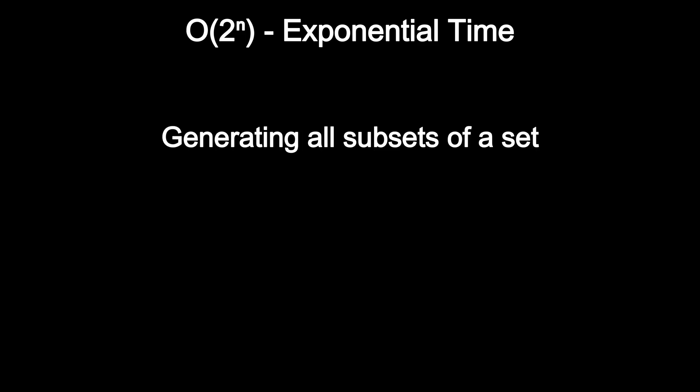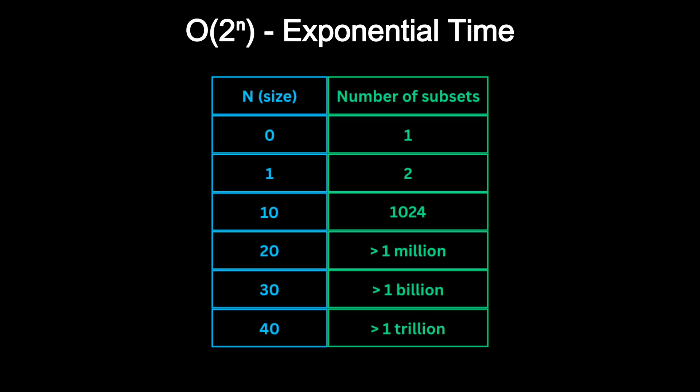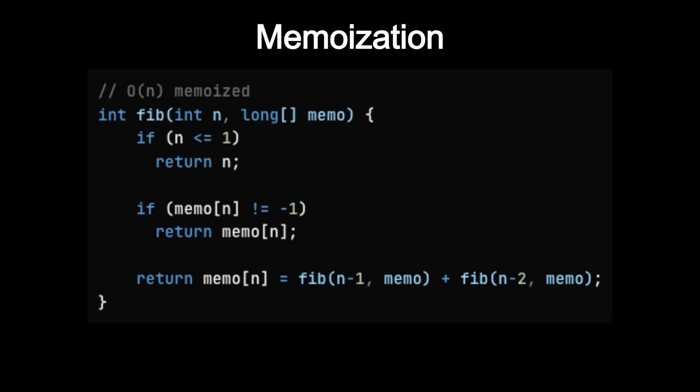A classic example is generating all subsets of a set, also called the power set. If the set has N elements, there are 2 raised to N possible subsets. That means just for 30 elements, you are looking at over 1 billion possibilities, and for 40, over 1 trillion. This kind of growth becomes unmanageable very quickly. Even a small increase in N makes the runtime explode. But the good news is that many exponential time problems can be optimized using techniques like memoization or dynamic programming. These techniques prevent us from recomputing the same subproblem, often reducing the time from exponential down to a much more practical polynomial time.